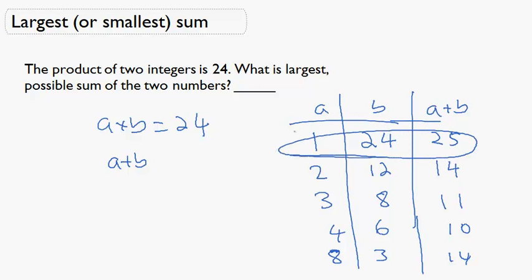So in this case, the largest possible sum is when they're as far apart as possible. So that's 1 times 24, which is equal to 25.